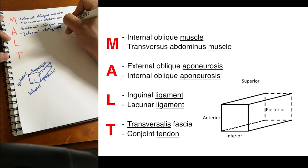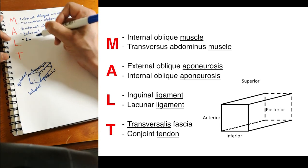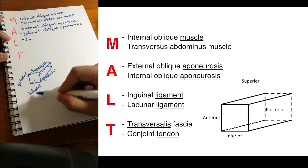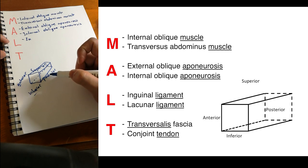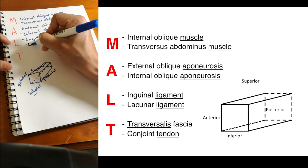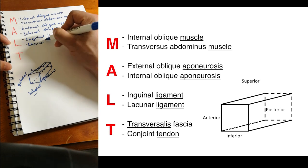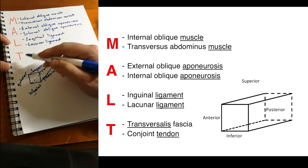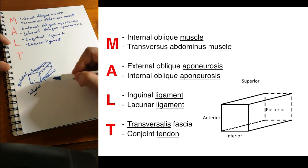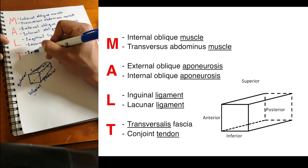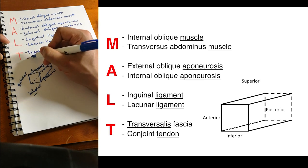The ligaments form the inferior structures that constitute the inferior border: the inguinal ligament and the lacunar ligament. And now there are two T's which form the posterior border, and that's the transversalis fascia and the conjoint tendon.